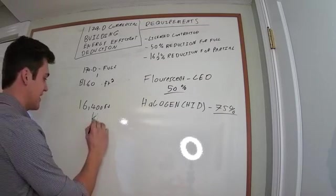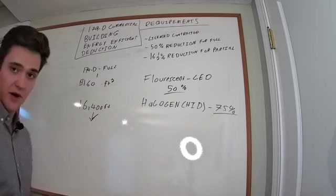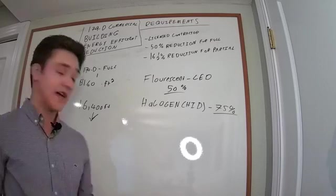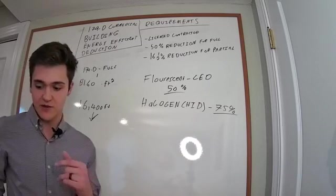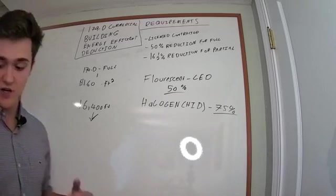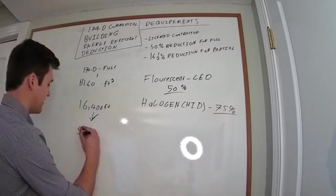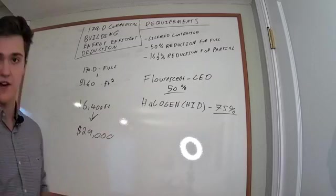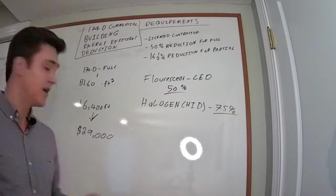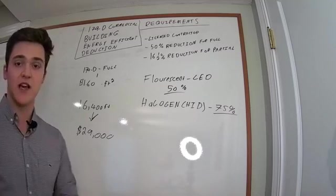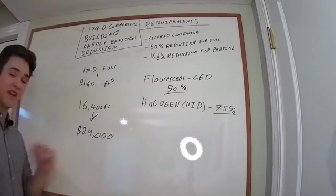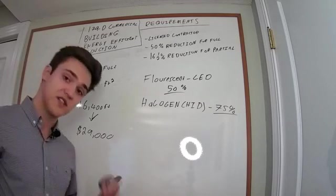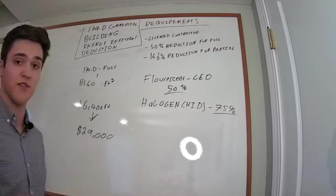If you replace the lighting system in your 16,000 foot warehouse, which is average, it's not as big as I thought it was when I first saw that number, you're going to be looking at, like I said, $1.80 per square foot. That's $29,000, I'll round it down there for easy number. $29,000 you get just for replacing the lighting system in your building with something more efficient.